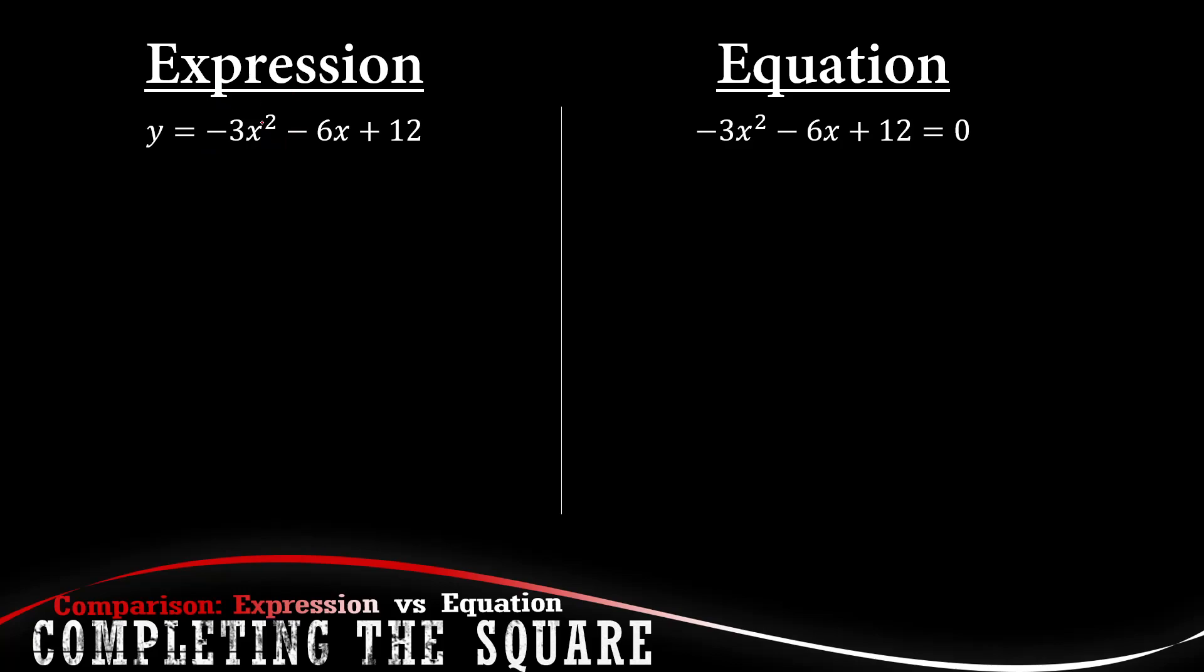I'm going to outline the similarities and the differences between when you have an expression and when you have an equation. When we have an expression we normally know that when we complete the square this coefficient over here we need to get that out of the way first, so we're going to factorize that. So that's x squared then plus 2x minus 4.